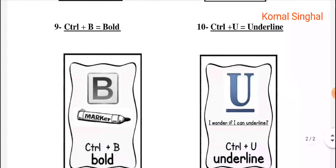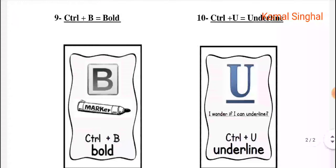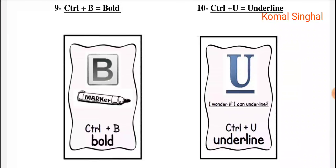Control plus B means Bold. If we have a line that we want to highlight or make bold, we will select it and use Control plus B. For Underline, if we need to underline a key or text, we will use Control plus U. Press Control plus U and the text will be underlined. Thank you for watching my video.